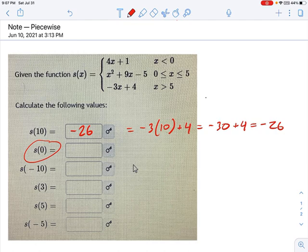x equals 0. Which equation do we use? You should be thinking about this equation right here. Because the first one is not x equals 0. That's x less than 0. That's not the same thing. So we have to use the equation that says x greater than or equal to 0.